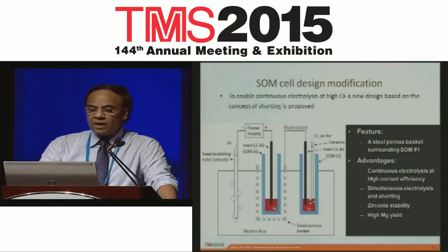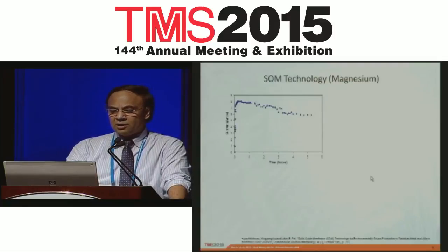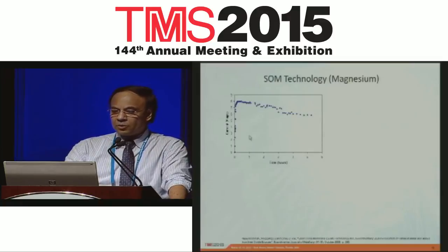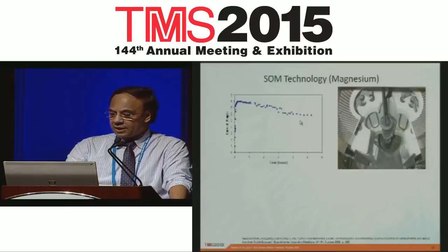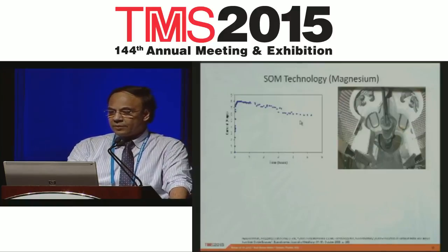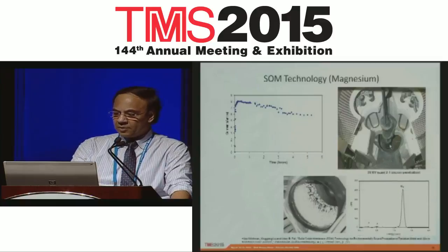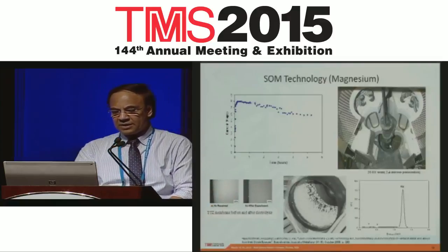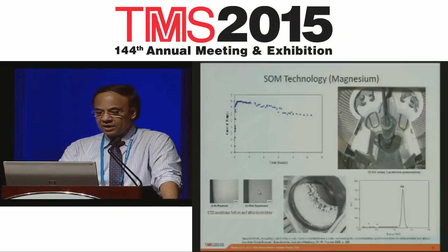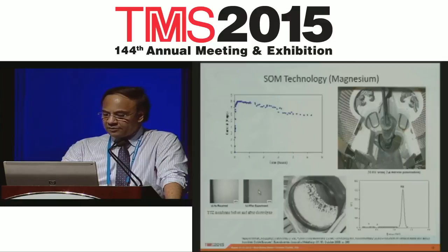Looking at the electrolytic current, as the magnesium oxide concentration decreases the electrolytic current decreases, with an applied potential of around 4 volts. Here is the cell at the end of the run. This is magnesium collected in the condenser as a solid, and the EDAX shows that because it is condensed from the vapor phase, it is very pure — about four nines in purity. The cross-section of the membrane as received and after the experiment shows that the membrane is relatively stable. These runs have been done in the lab for more than a week with continuous feeding of magnesium oxide and the membrane remains quite stable.